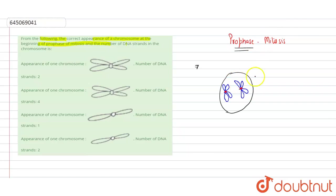Here we can see one strand highlighted, and the other is the second strand — two DNA strands joined together by a kinetochore. This kind of appearance we can see in prophase, where condensation of chromosomes has occurred.